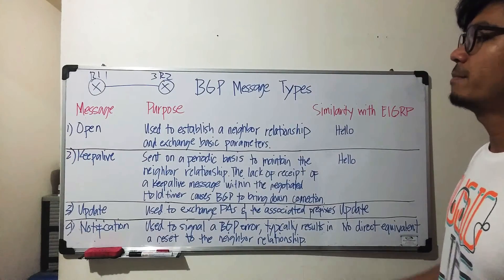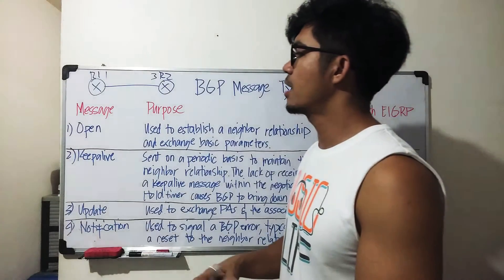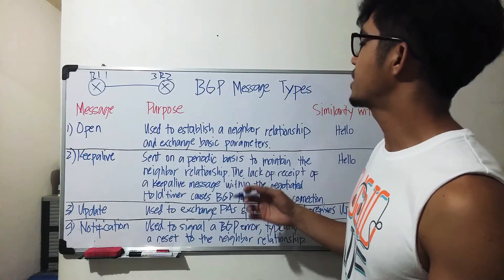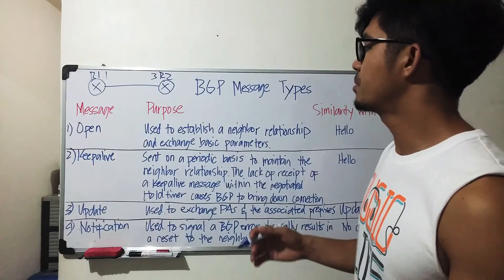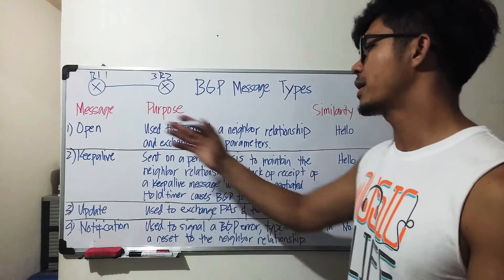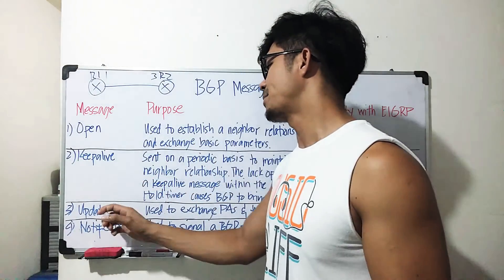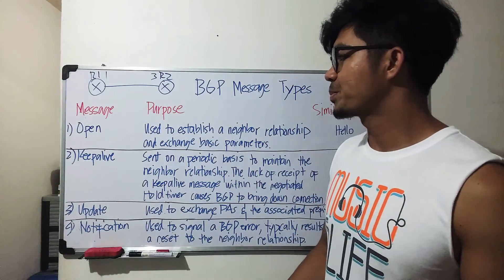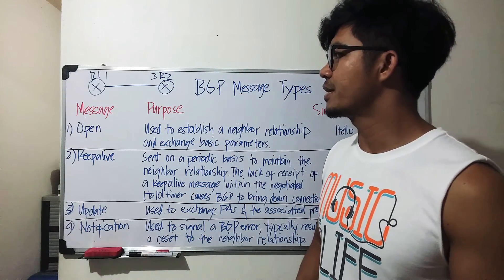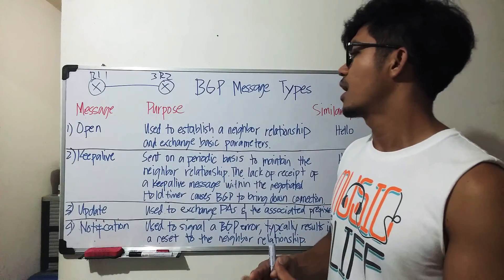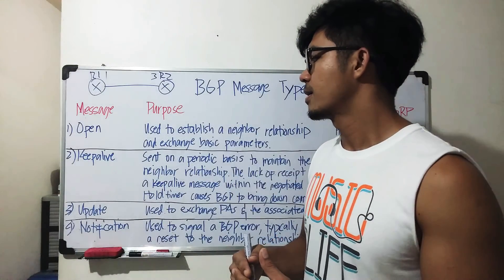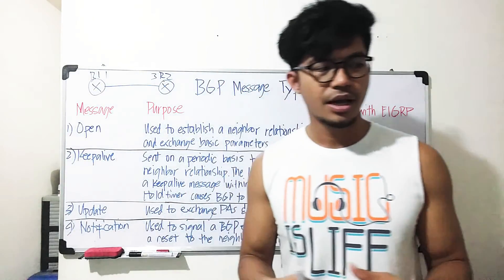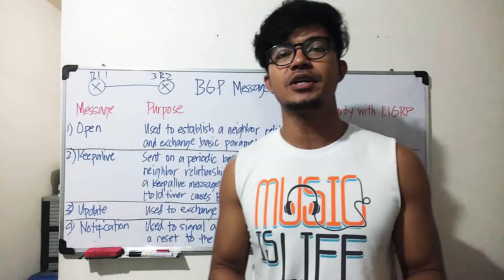To summarize, there are four BGP message types: open, keep alive, update, and notification. That's it for BGP message types — I'll talk about more networking topics in future videos.